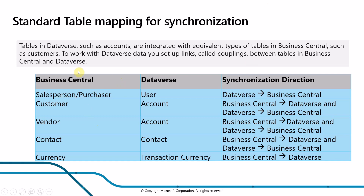In Business Central you have the salesperson/purchaser; in Dataverse they are users — synchronization goes from Dataverse to Business Central. Customers in Business Central are accounts in Dataverse, with two-directional synchronization. Vendors are also accounts but of type vendor, with two-way sync as well. Contacts map to contacts — also two-way. Currency maps to transaction currency and flows from Business Central to Dataverse.